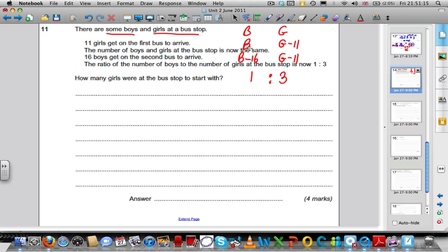The ratio of the number of boys to the number of girls is now 1 to 3. So, there are 3 times as many girls at the bus stop than there are boys at the bus stop. Let's think how to do this. So, after the 11 girls get off, the number of boys equals what's left over. So, we can say that the boys were the girls subtract 11.